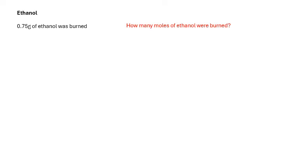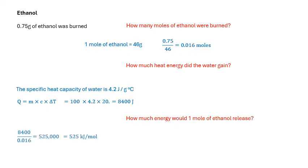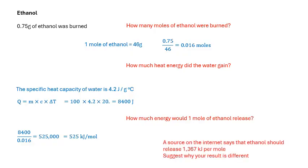Now have a go at ethanol yourself — pause the video and work it out. One mole of ethanol is 46 g, so 0.75 ÷ 46 = 0.016 moles. How much heat energy did the water gain? Using Q = mcΔT: 8,400 J. How much energy would one mole of ethanol release? That works out at 525 kJ/mol. Again, if you look it up on the internet the literature value is larger, for the same reason.